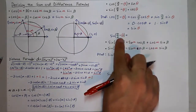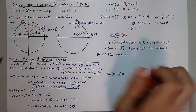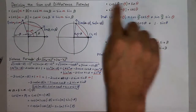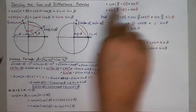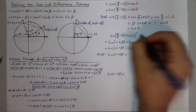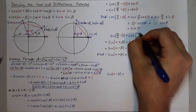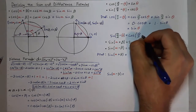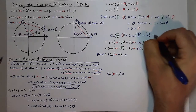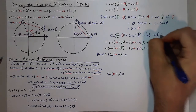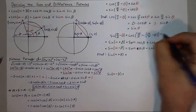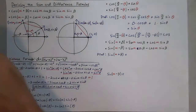I can do the same thing for sine of pi over 2 minus theta. Since sine of theta equals cosine of pi over 2 minus theta, I can rewrite that as cosine of pi over 2 minus (pi over 2 minus theta). Pi over 2 minus pi over 2 is 0, and minus negative theta is just theta, so this equals cosine of theta. I've now proved both co-function identities.